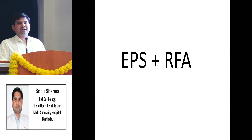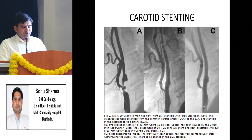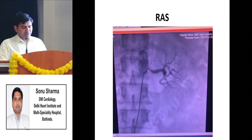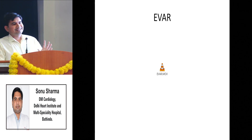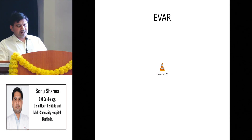For PSVTs and VTs with normal LV function, we can do EP study with radiofrequency ablation (RFA) to cure the PSVT. For carotid stenosis, carotid stenting can reduce the risk of recurrent stroke. For peripheral artery disease, peripheral stenting can be done. For aortic aneurysm, endovascular aortic repair (EVAR) can be performed - a graft or large stent is placed inside the aorta to seal the aneurysm without surgery. Aneurysm surgery is very high-risk, so with EVAR we can treat the aneurysm with minimal risk.